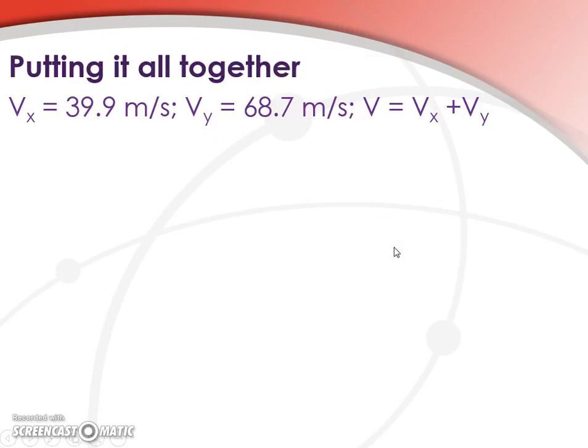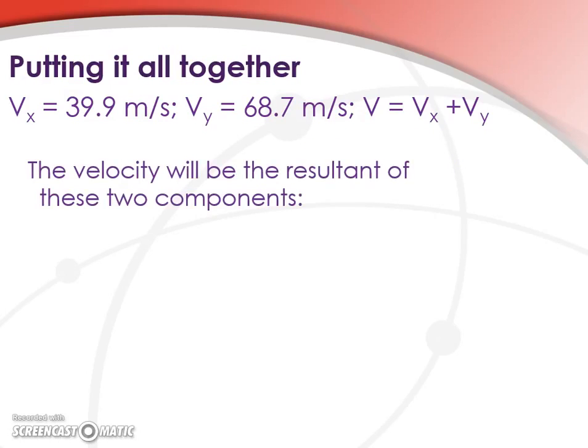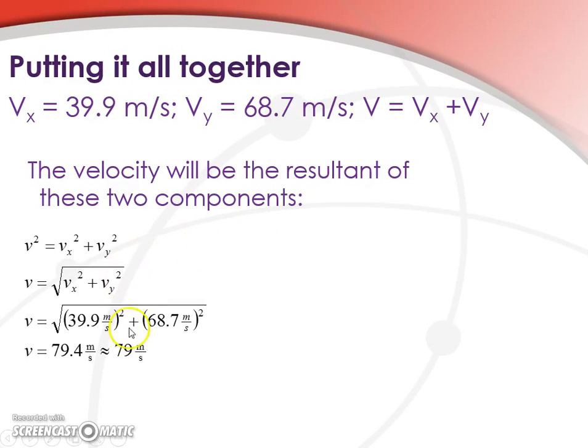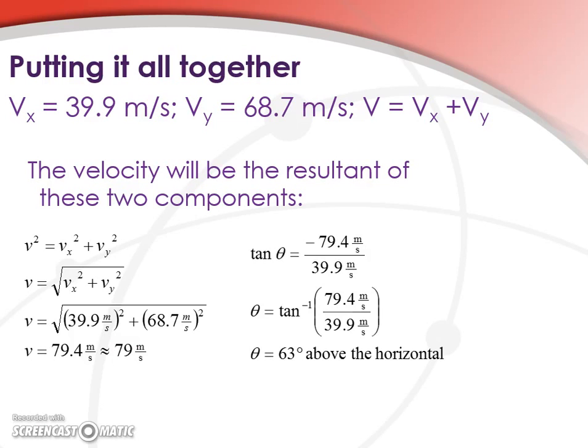Now we have everything that we need in order to put it all together and get our overall velocity. We have vx equals 39.9 meters per second. Remember that vx is constant across the whole experiment. vy equals 68.7 meters per second. And our overall velocity is just the sum of this. And we've done this before. Pythagorean theorem gives us the magnitude of 79 meters per second. And tan theta gives us the angle. So we get 63 degrees above the horizontal for our angle.